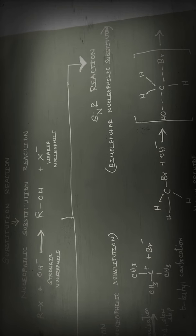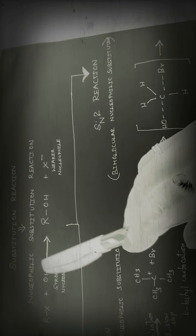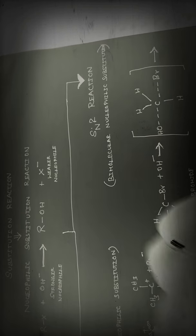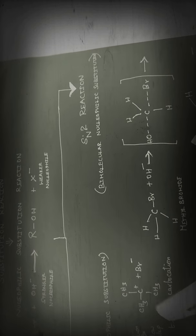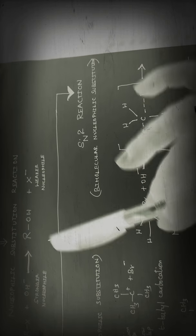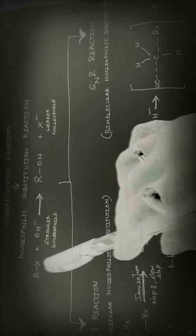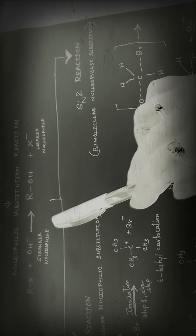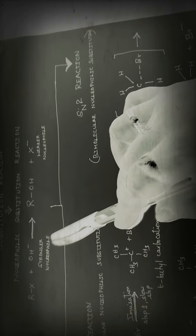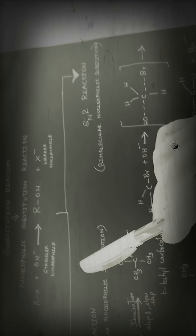We're here under substitution — nucleophilic substitution reaction. This is about the substitution reaction which are brought about by the attack of a nucleophile. In a nucleophilic substitution reaction, the weaker nucleophile is replaced by the stronger nucleophile. Here, RX means some alkyl halide. In alkyl halide, the halogen group is a weaker nucleophile. When you say nucleophile — nucleus, phil means loving — so, nucleus loving. A nucleus-loving ion, that means rich in electrons and ready to donate electrons, replaces the halogen group from the alkyl group.